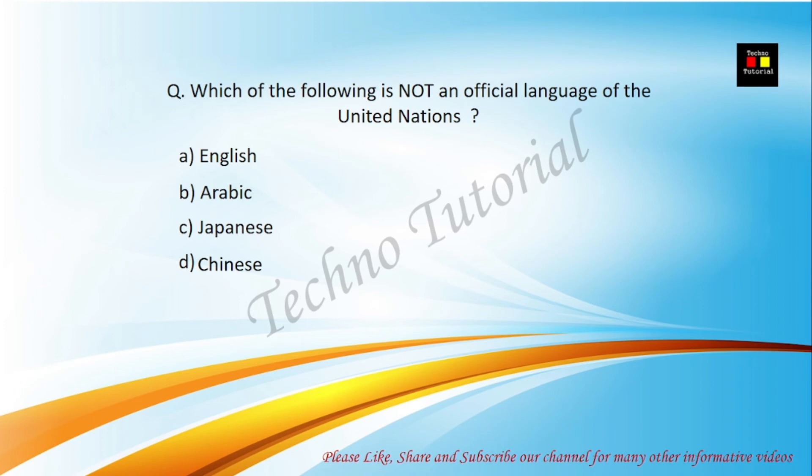Which of the following is not an official language of the United Nations? Options are English, Arabic, Japanese, and Chinese. The correct answer is Japanese — Japanese is not an official language of the United Nations.